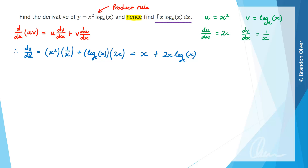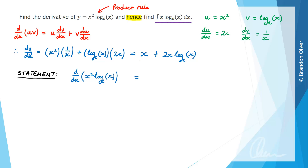The word 'hence' is inviting us to use this information to find the anti-derivative of x log e of x. The process we're going through is integration by recognition. To organise our thoughts, we start with a statement relating the derivative we just found: d/dx of x squared log e of x is equal to the expression we found above, which is x plus 2 times x log e of x. I've coloured this in purple to match what we're being asked to find, so we can track it through our working.